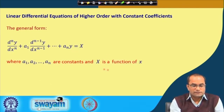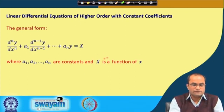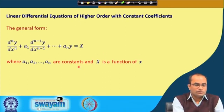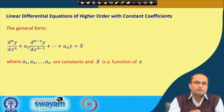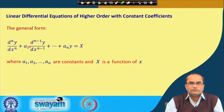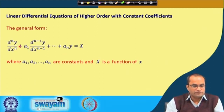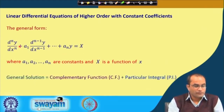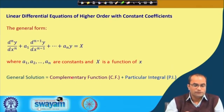The right-hand side x can also be a constant, but in general we take it as a function of x. Such an equation is called a linear differential equation because there is no product of y or y with its derivative. It is an nth order linear differential equation. The general solution has two factors: one is called the complementary function and the other is called the particular integral.